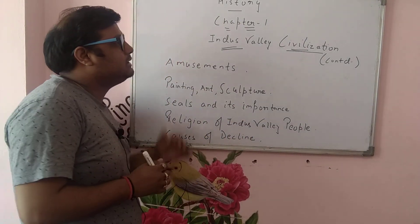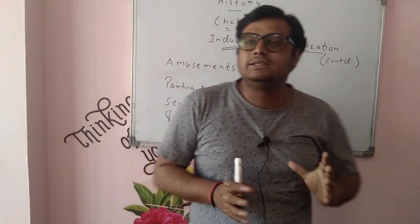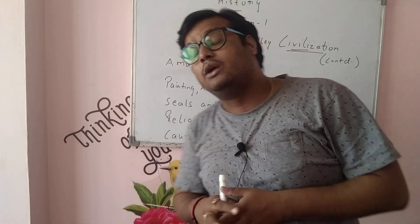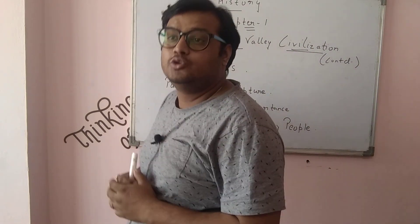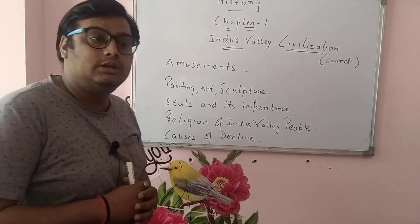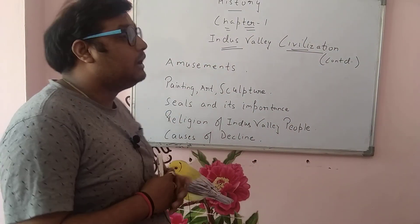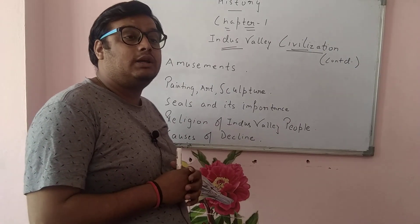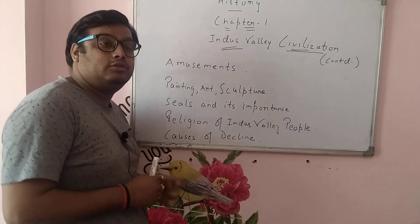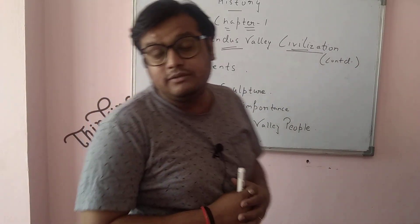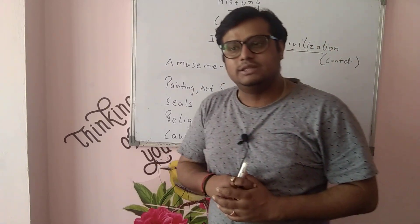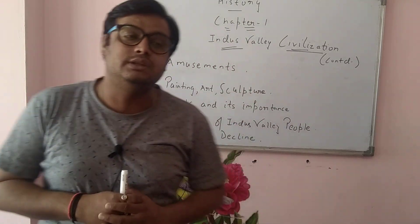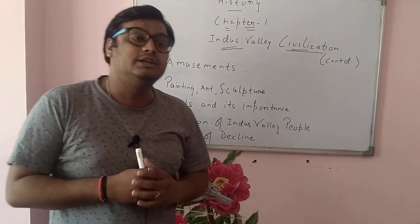Indus Valley Civilization was basically a civilization that was flourishing around 5000 years ago. It is considered to be the oldest civilization of the earth. There were two main great sites: the Harappan civilization and the Mohenjo-daro civilization, which constituted the Indus Valley Civilization. These are the river valley civilizations which flourished near a river.